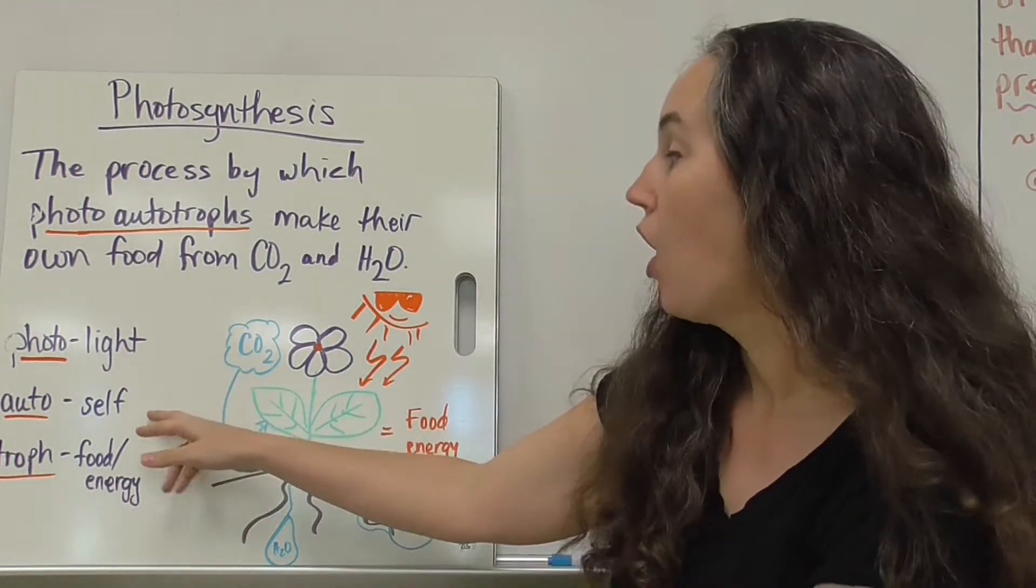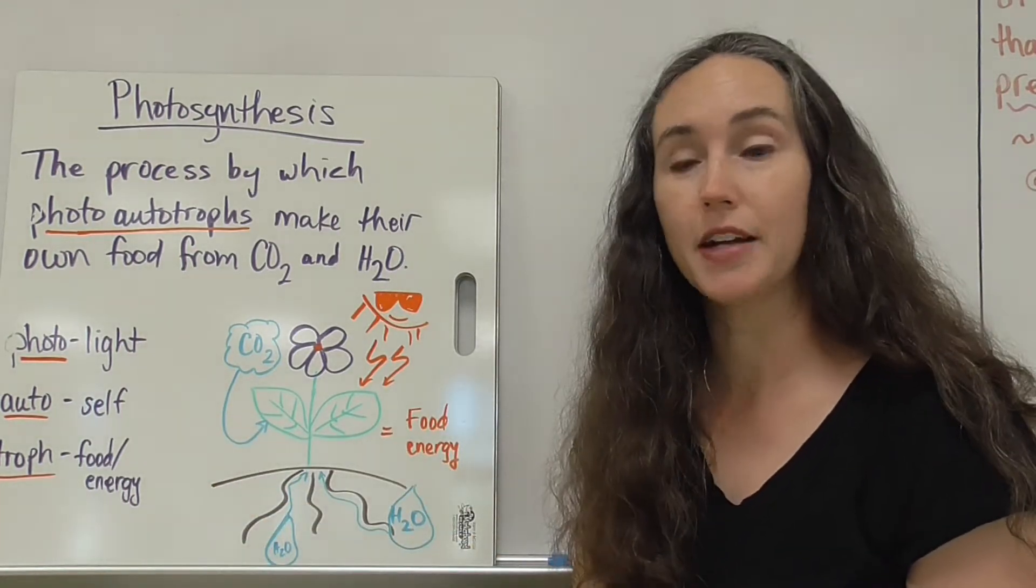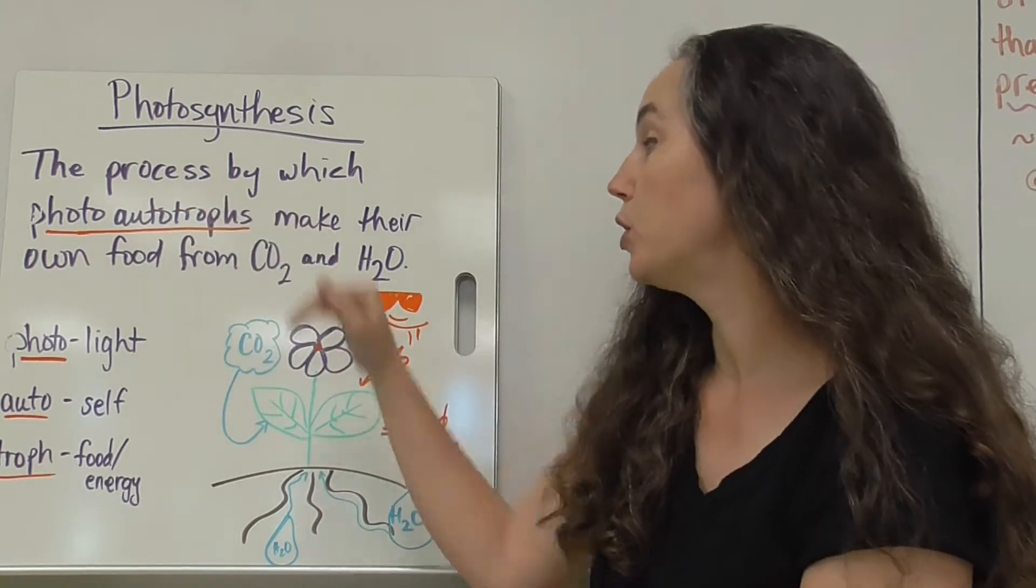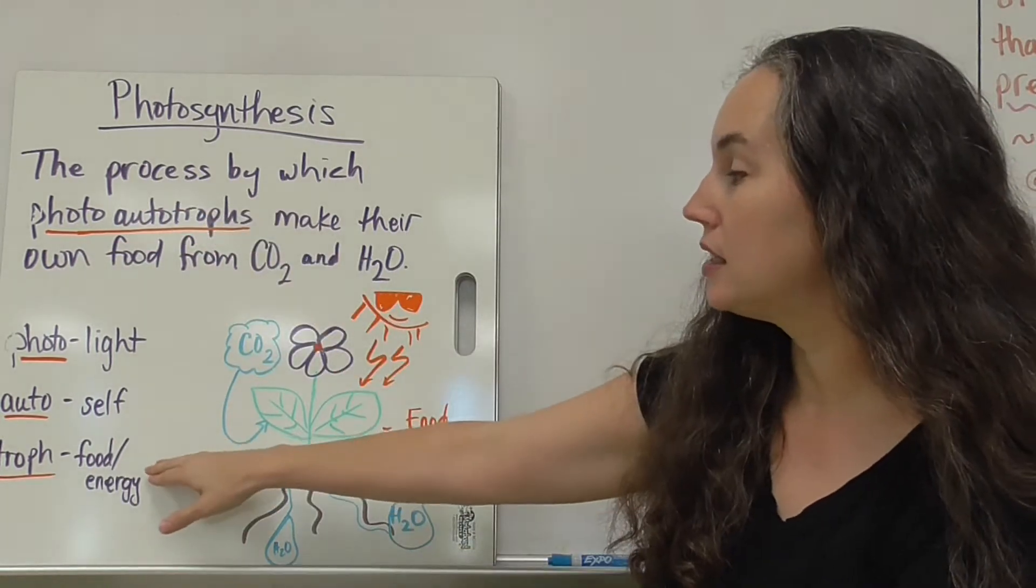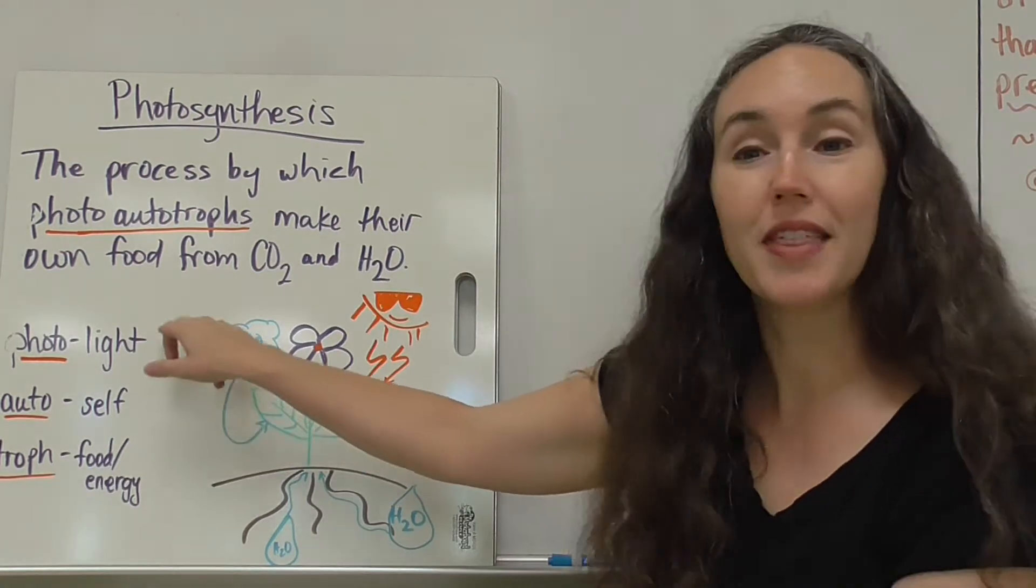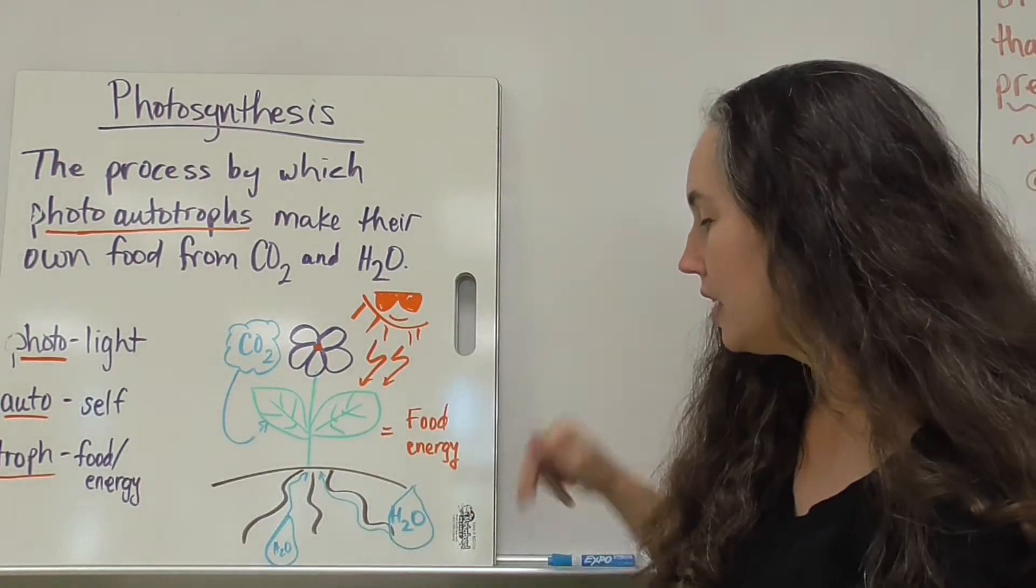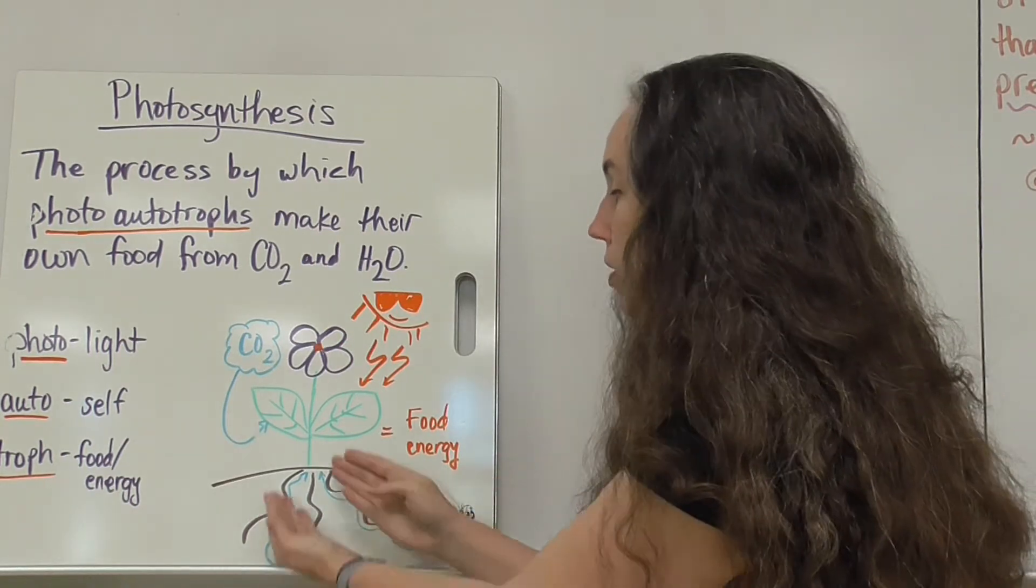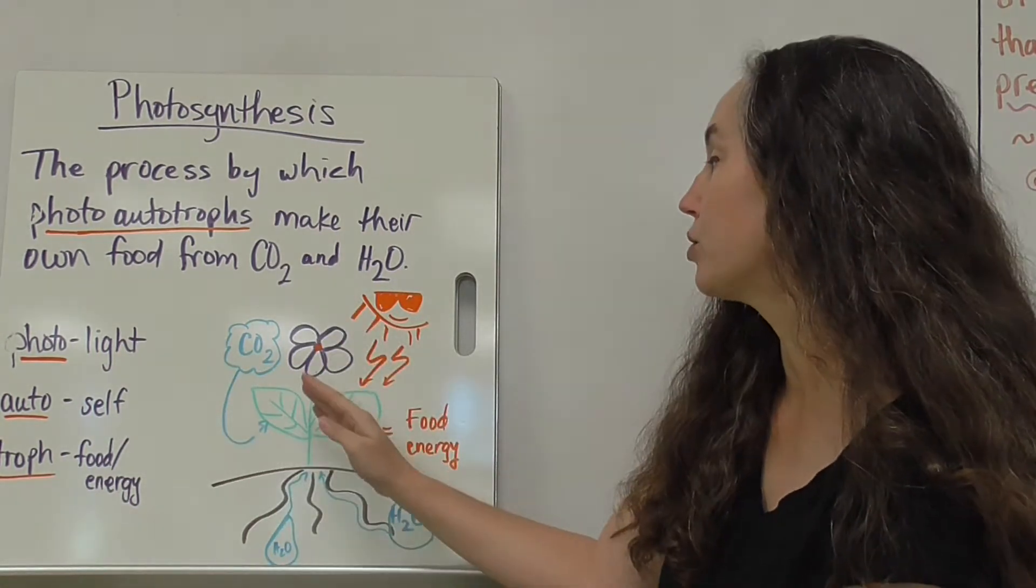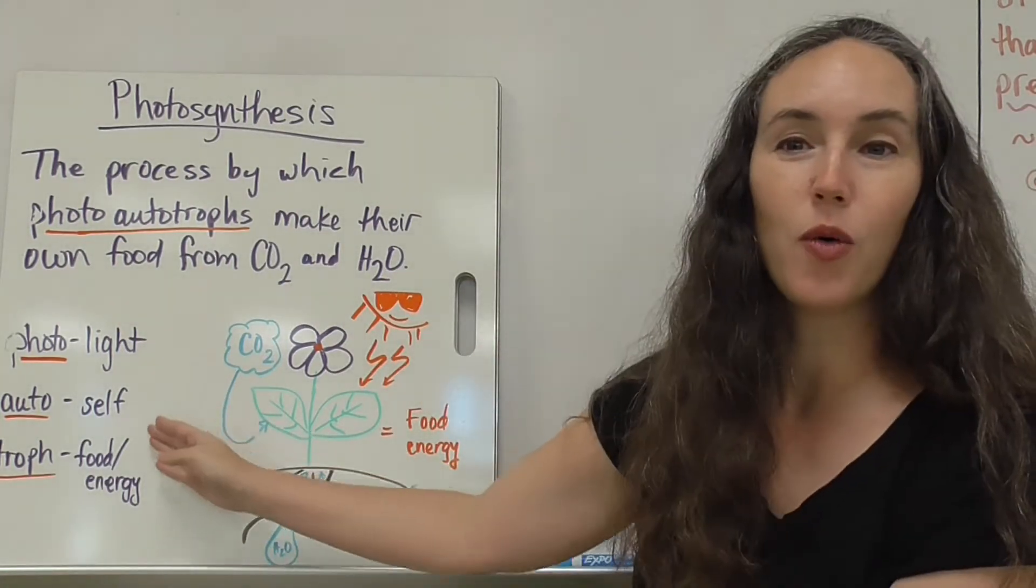Photo means light, auto means self, and troph means food or source of energy. So photoautotroph is an organism that makes its own food by itself with the help of light. So you can see here's a plant, it's taking water up through the roots, carbon dioxide in through the leaves, and in the presence of light, it's going to make its own food.